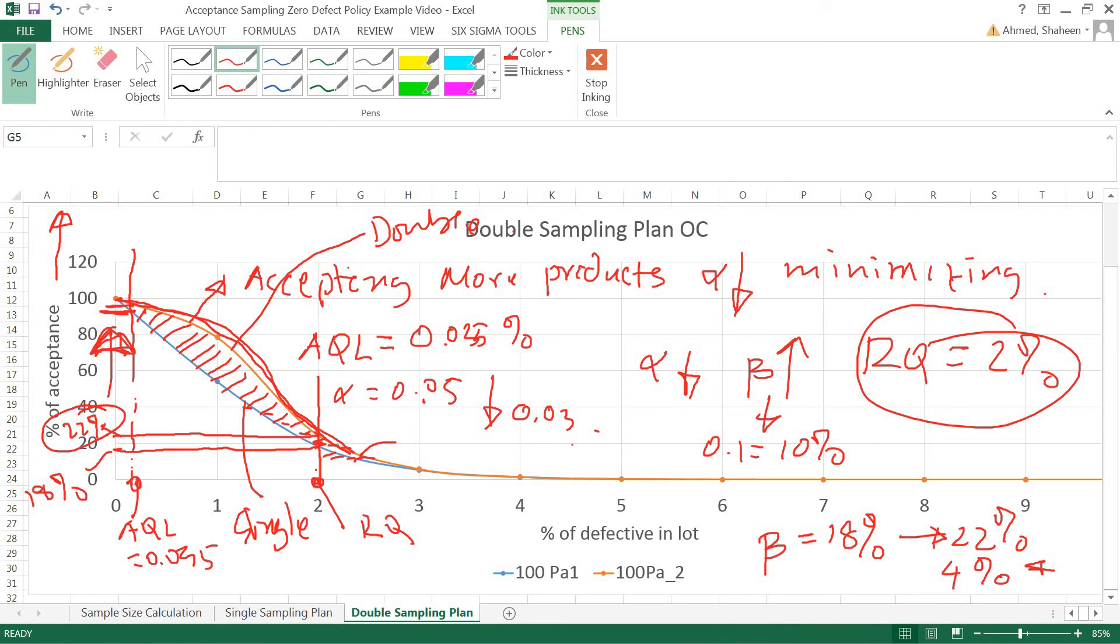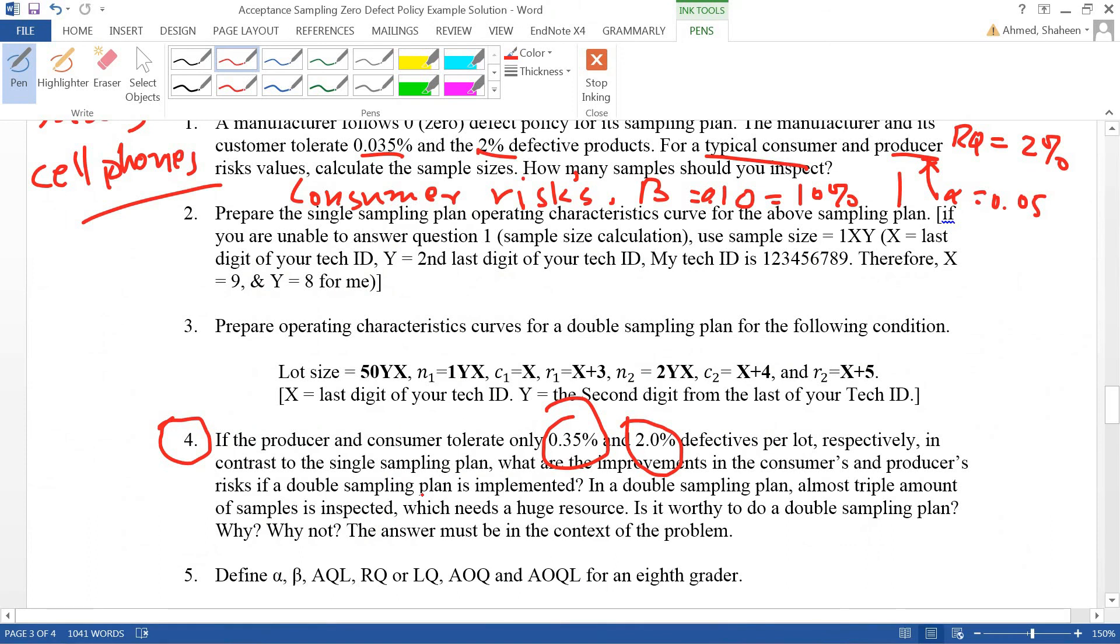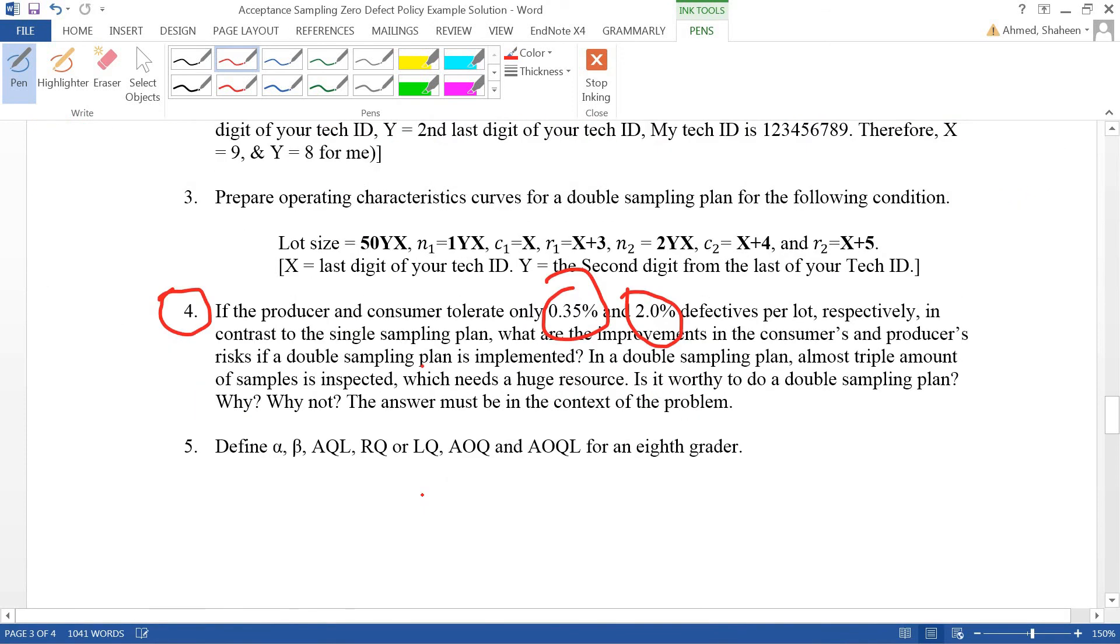It depends on the product too. If you produce some product that is very expensive, you may want to inspect more. The question is asking: is this thing worthy? In this case, yes or no. Just have the discussion ready that you decrease the manufacturer risk by the increase of the producer risk. You're going to be selling more products, but you're not sure you want to send all this product to the market where there was inherently some problem. Double sampling plan is more, I would say, theoretical in nature than the actual application of it.